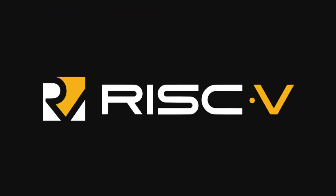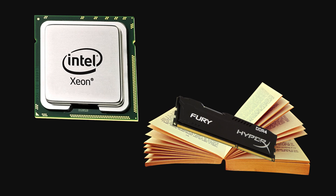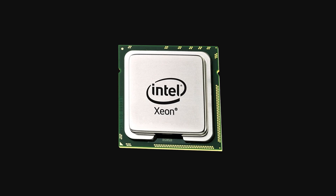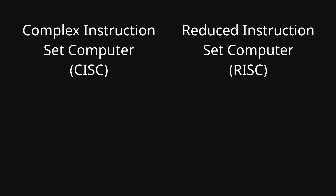To understand what RISC-V is and why this computer is special, we need to look at what an instruction set is. An instruction set architecture, or ISA, is the set of instructions that allow a CPU to perform tasks such as reading from memory and performing calculations. Since the instruction set determines the CPU's basic functionality, a program written for one instruction set will not run on another unless it is recompiled or there's some form of emulation going on. Most instruction sets are considered either CISC or RISC by design.